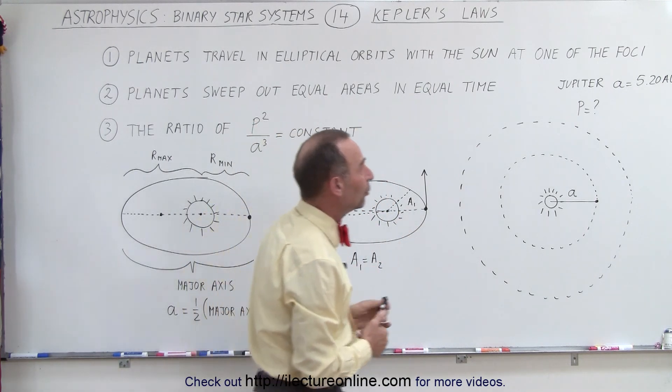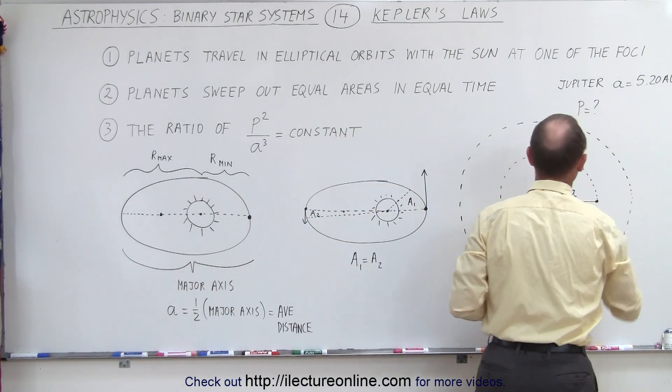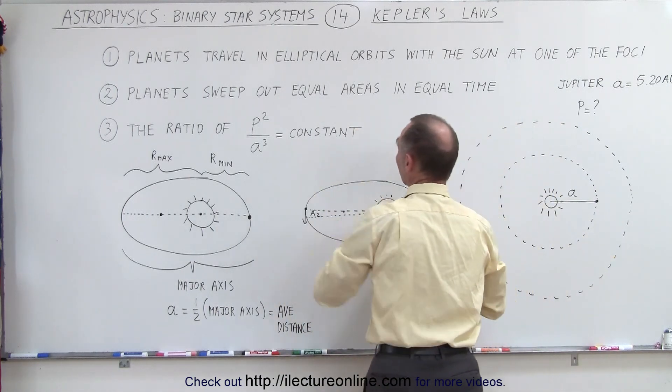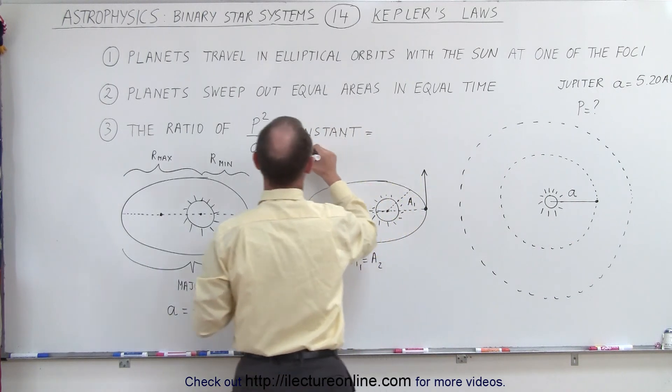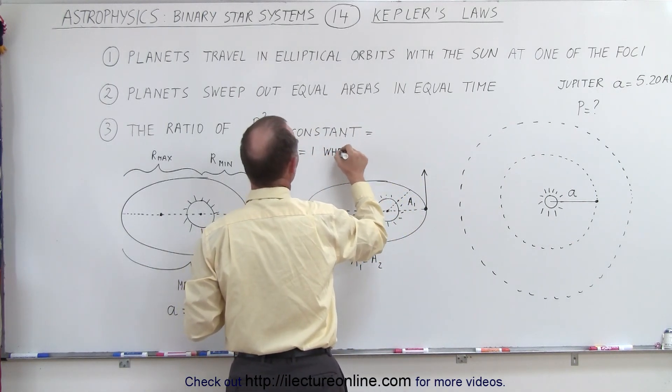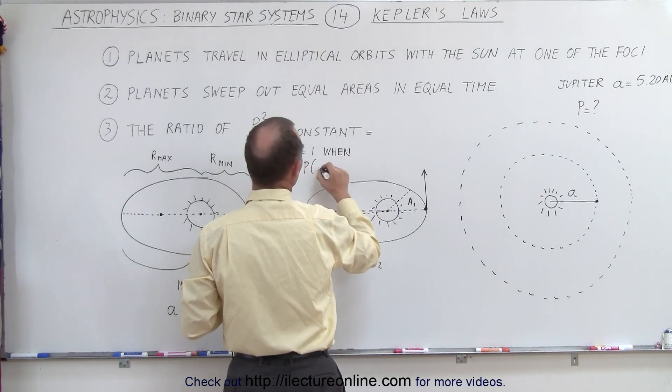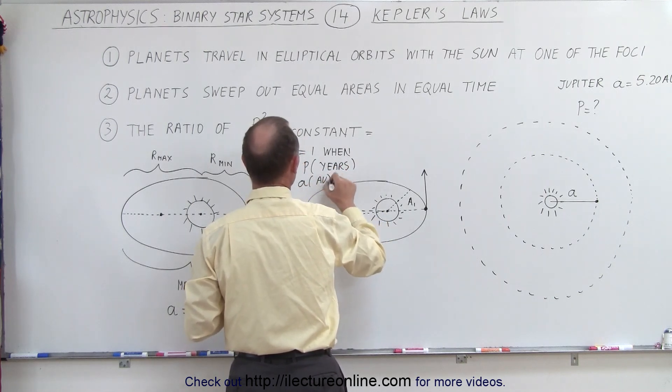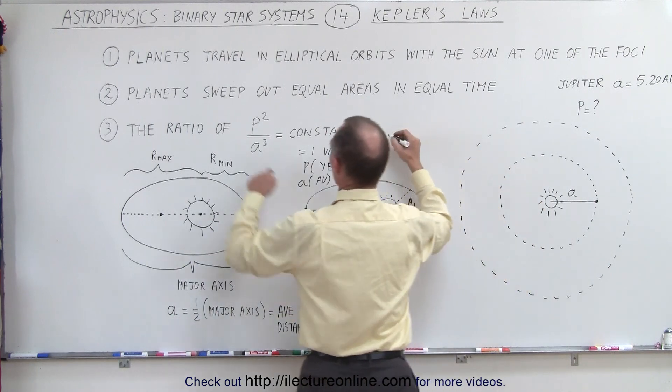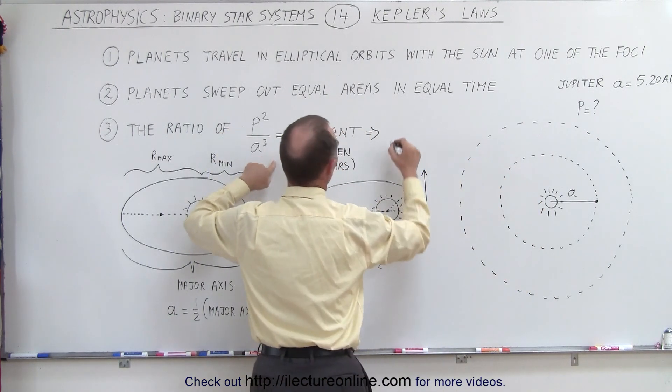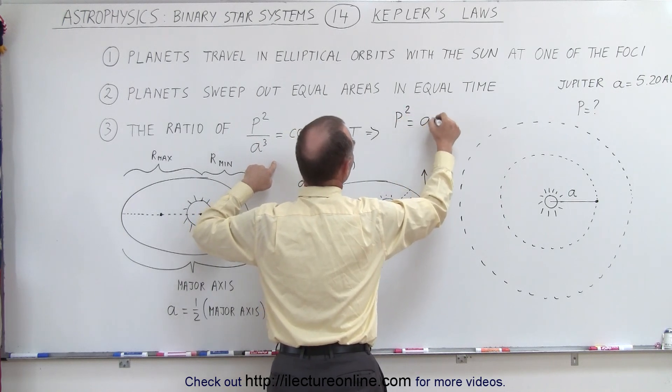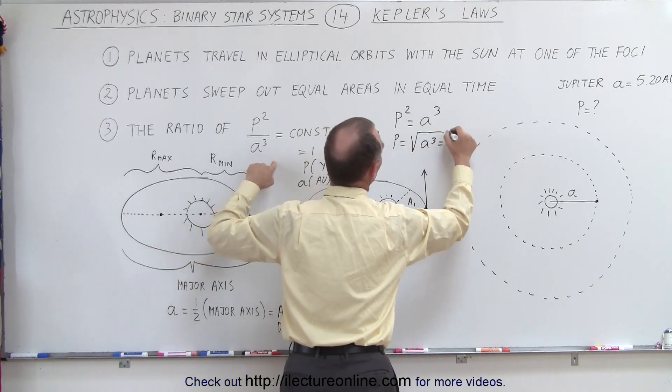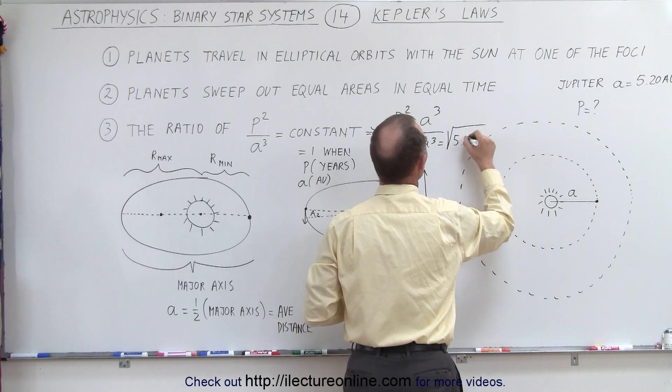As an example, we now know that Jupiter is about 5.2 astronomical units away from the Sun. And if we then want to use that to calculate the period, we can do that as follows. We can say that this is equal to one when P is in years and A is in astronomical units. So let's go ahead and check that out. The period will be equal to, we can say that the period squared will be equal to A cubed, or the period is equal to the square root of A cubed, which is equal to the square root of 5.2 cubed. And of course, that will be the period in years.